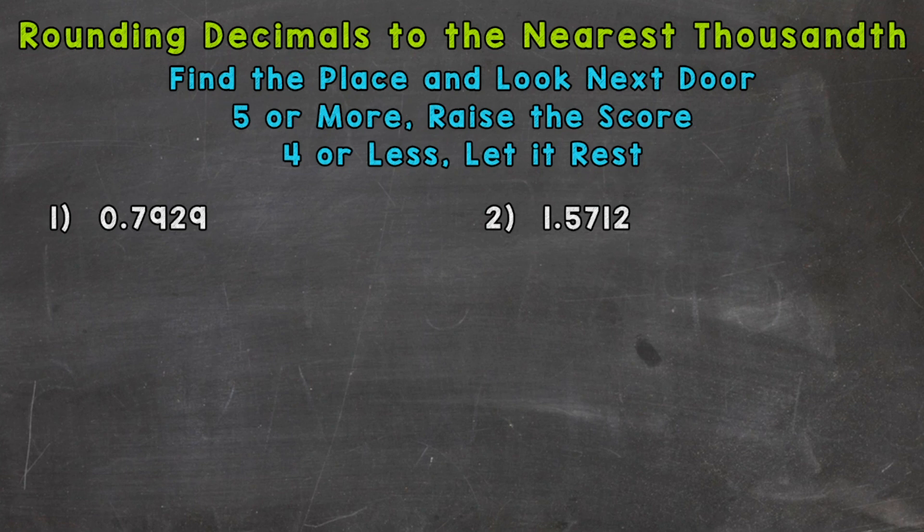So let's jump right into number one where we have 0.7929. The first thing we need to do is find the place that we are rounding and in this case it's the thousandths place. So let's underline that digit and we have a 2 there.